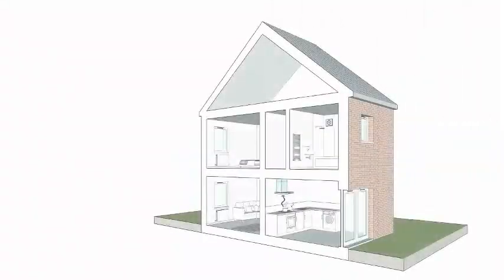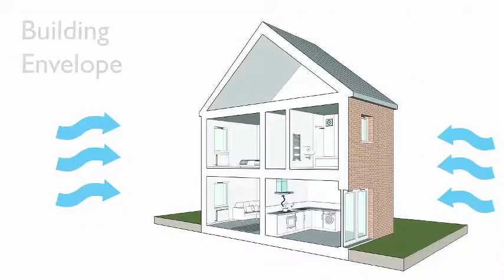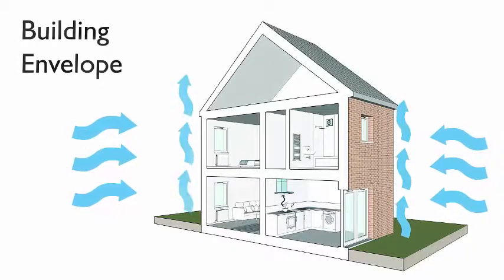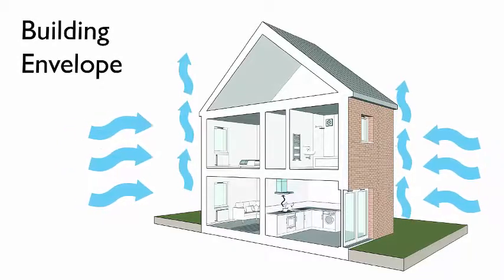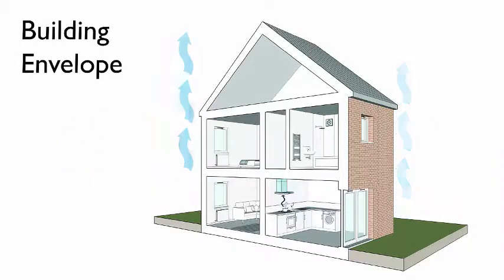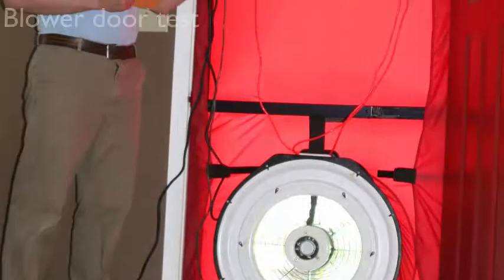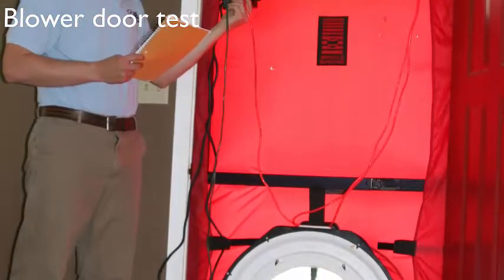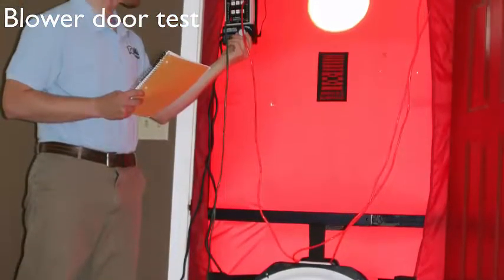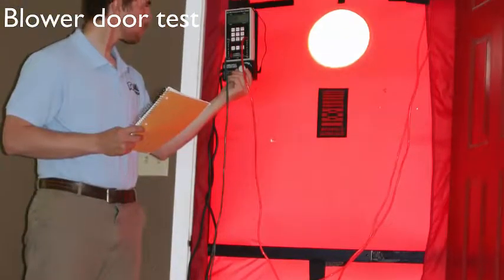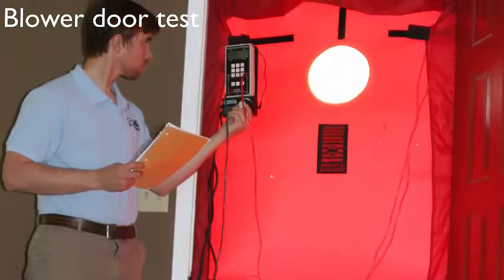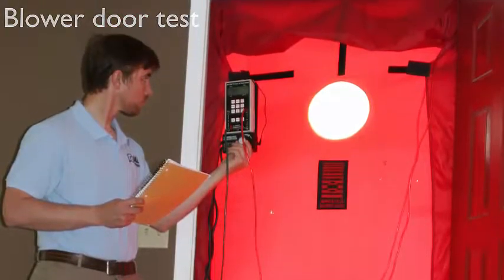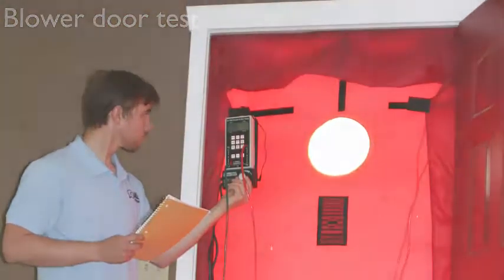When a builder implements all these measures, the result could be a fairly tight building envelope. Ideally, the air tightness of the building envelope should be measured by performing a blower door test. This test determines how much air leaks from the building and how much outside air enters.